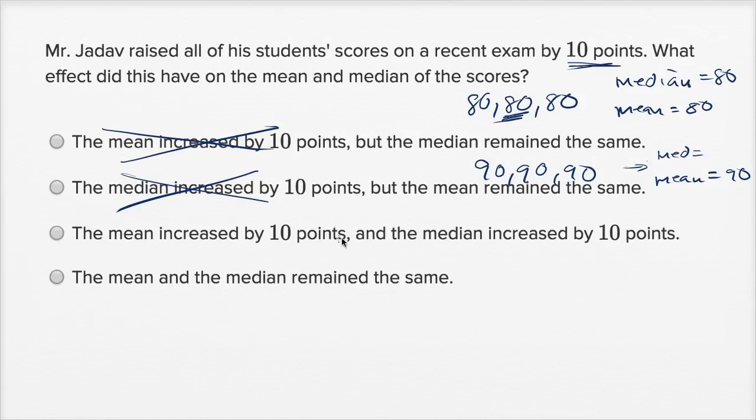The mean increased by 10 points, and the median increased by 10 points. Now, this combination we picked, this particular case we picked, this doesn't prove that this is always going to be true, but at least it doesn't contradict it. So we can't cross it out just yet.